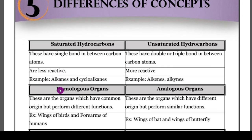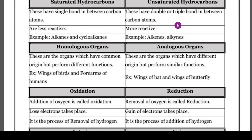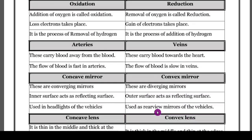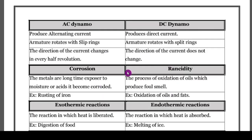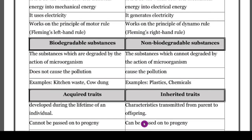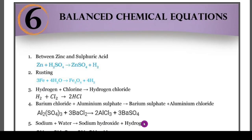The next topic is differences of concepts. I have given only the important differences — I am not going to explain each one in detail, as that would take too much time. Instead, I am providing a PDF for you to download and practice thoroughly. The differences covered are: saturated and unsaturated hydrocarbons, homologous series and analogous series, oxidation and reduction, arteries and veins, concave mirror and convex mirror — which were also asked in the preparatory question paper — convex lens and concave lens, AC dynamo and DC dynamo, corrosion and rancidity, and exothermic and endothermic reactions.